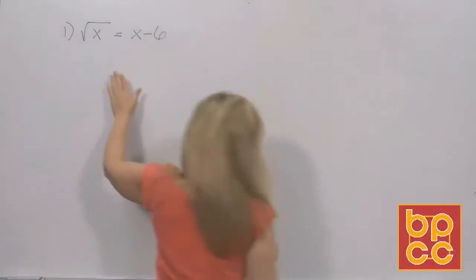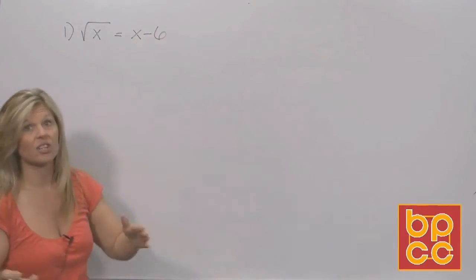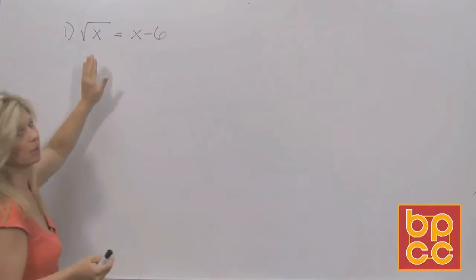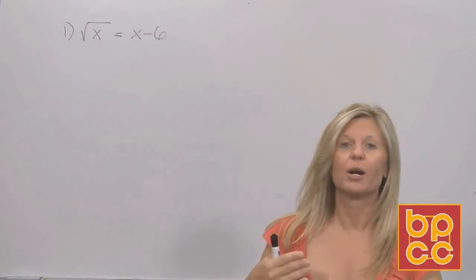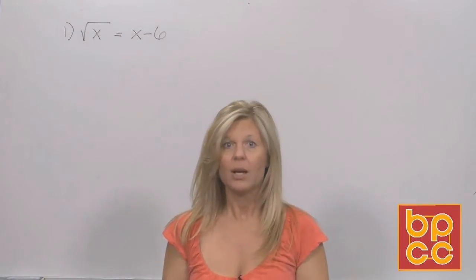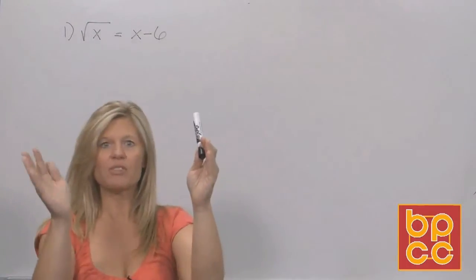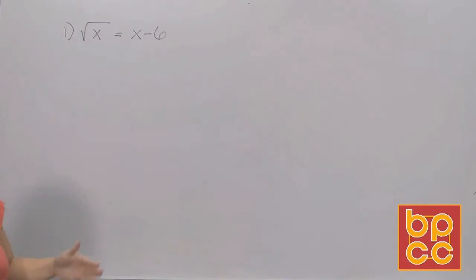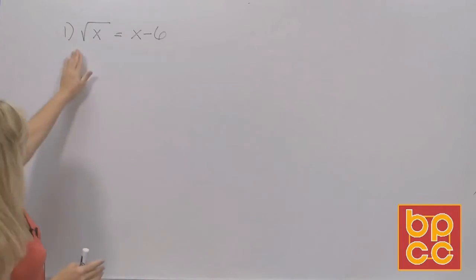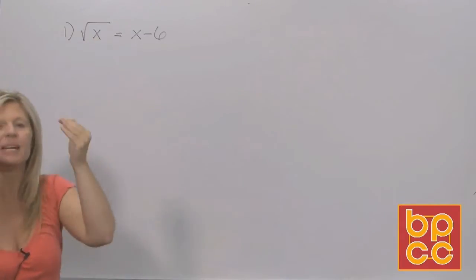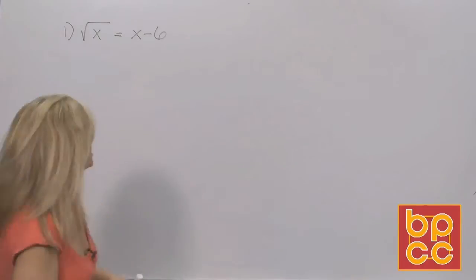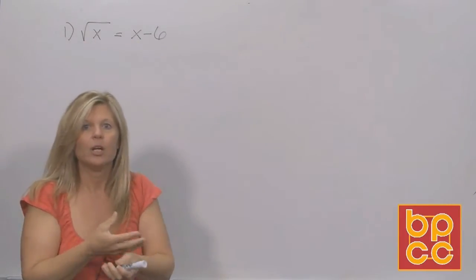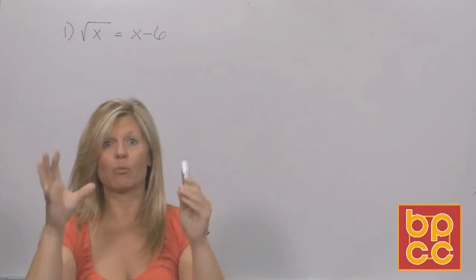Our equation is square root of x equals x minus 6. This is obviously a radical equation — radical is another word for root, so it contains a root symbol. Think of the root symbol like a house with x being stuck inside it. Right now we can't combine this x inside the symbol with this x outside it, so the moral of the story is we're going to have to get rid of the symbol — the house.